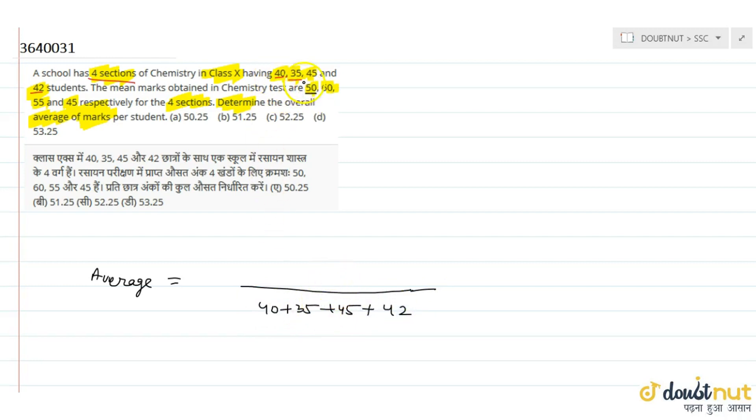First section average is 50, and the first section total is 40, so that is 40 into 50. Second section has 35 students with average 60, so this is 35 into 60, plus 45 into 55, plus 42 into 45.